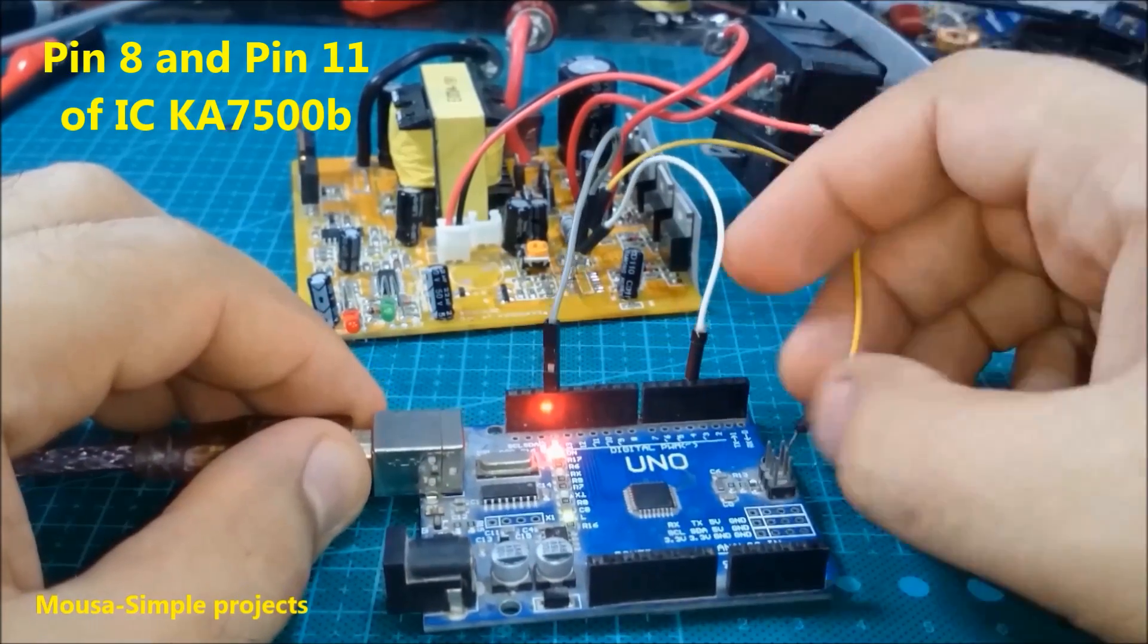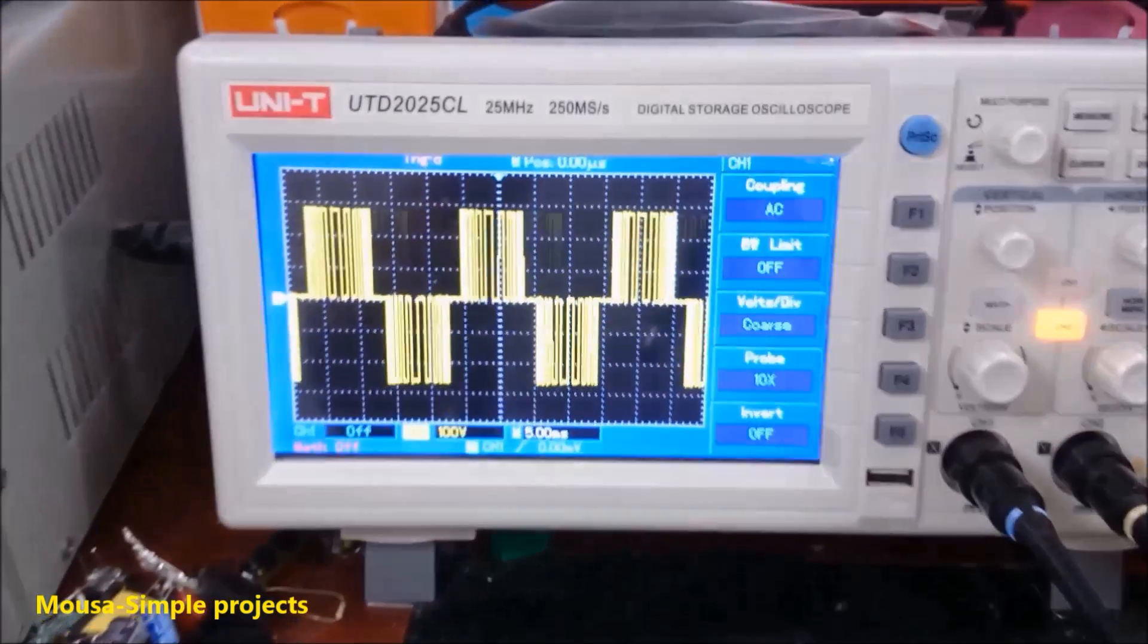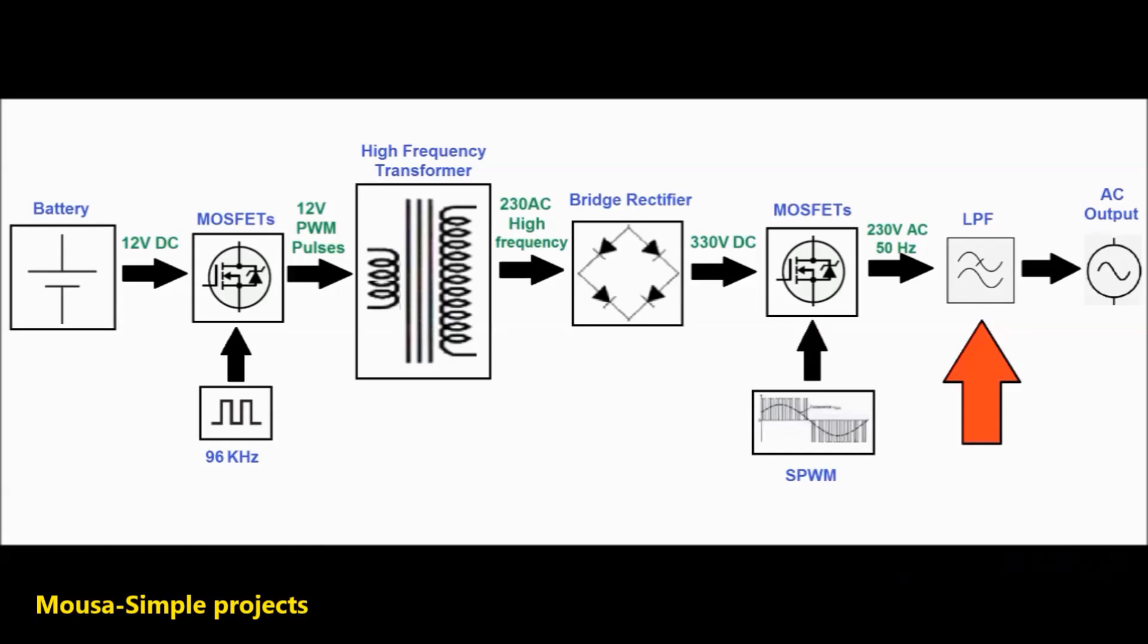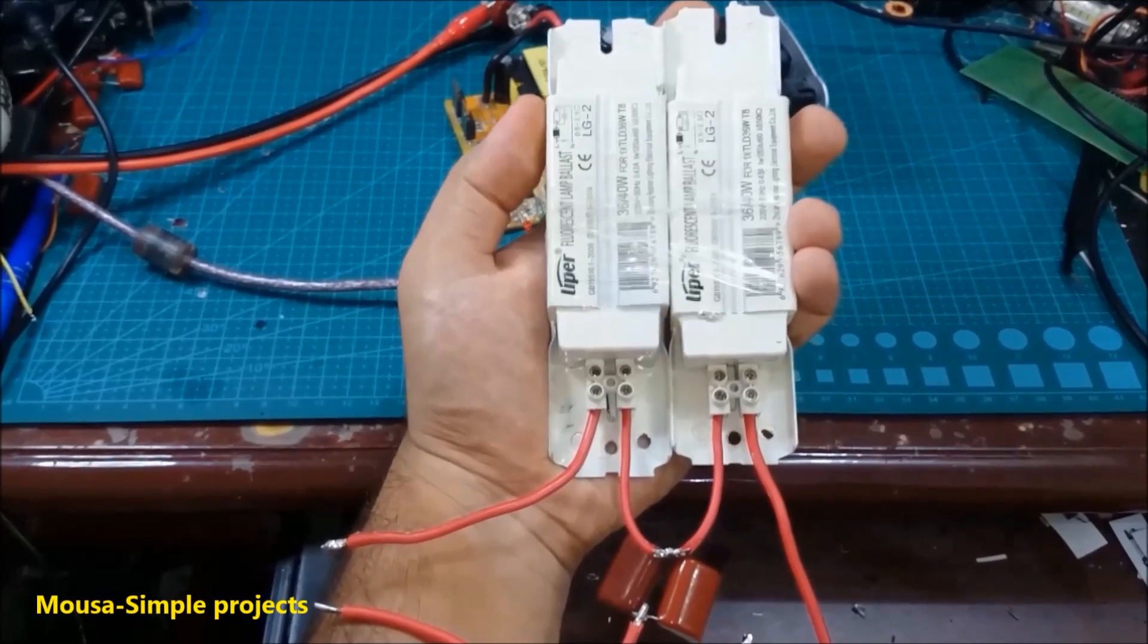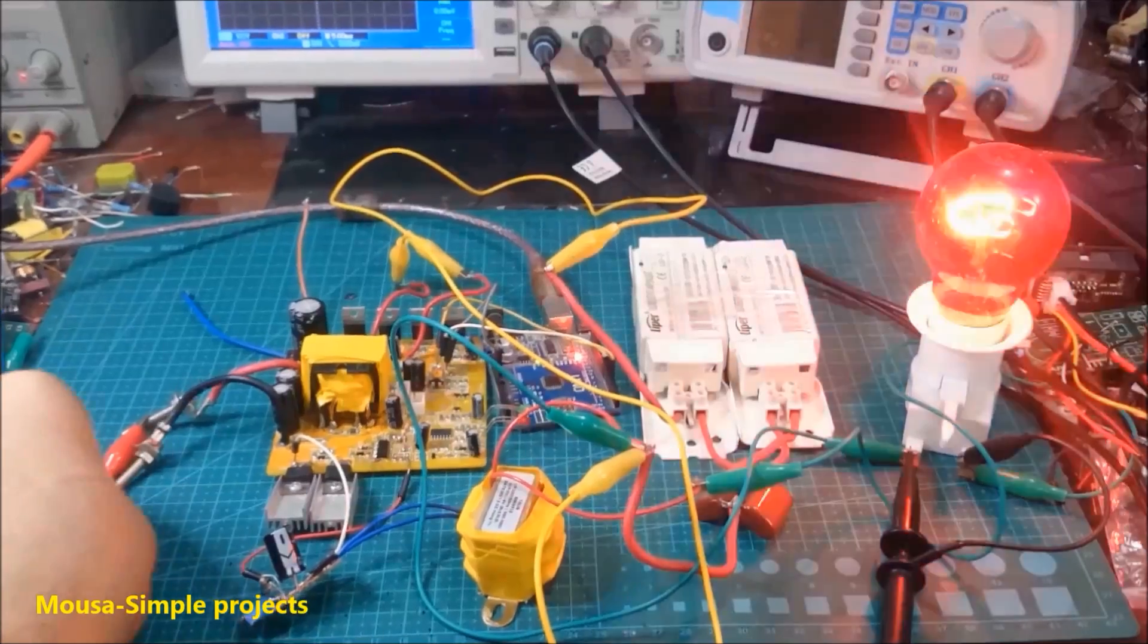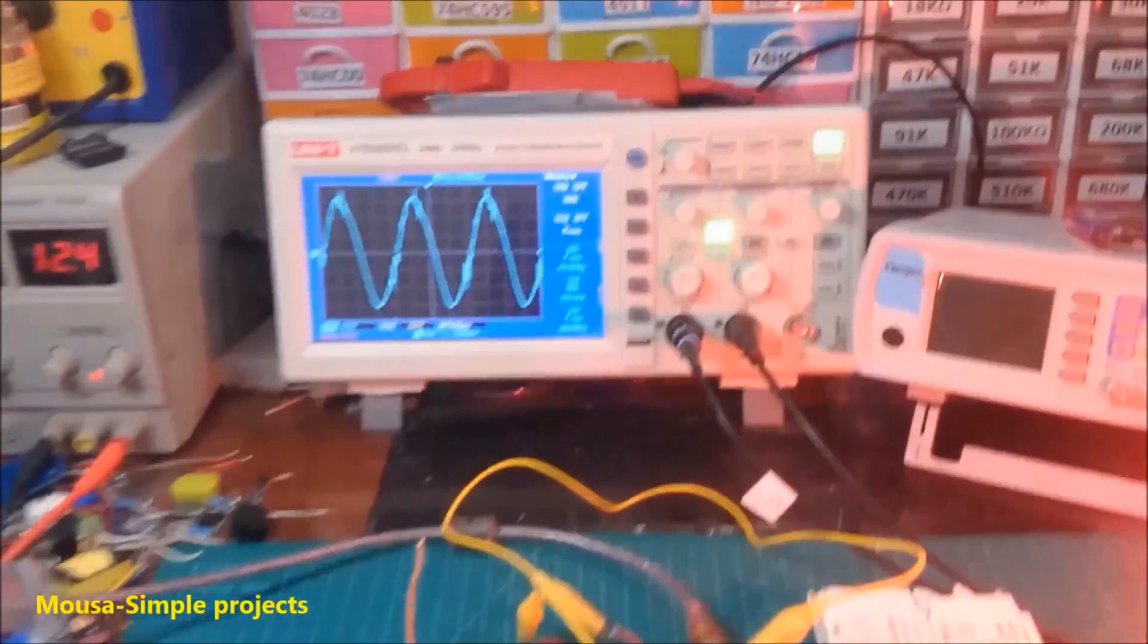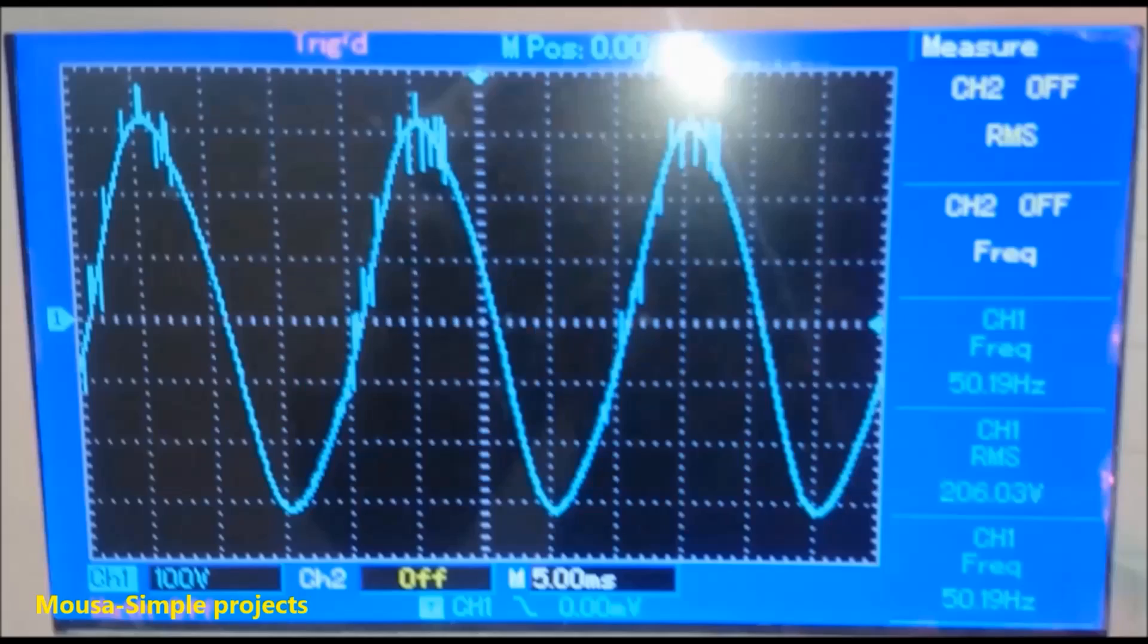Now we have SPWM in the output of the inverter. A low-pass filter in the output to convert SPWM to pure sine wave. As you can see, after connecting the low-pass filter in the output, now we have a sine wave, but this waveform is not very clean. There are some spikes.